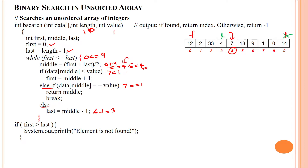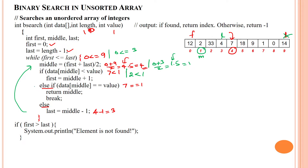Going back to the loop: first index 0 is less than or equal to last index 3 — true. Calculating middle: 0 plus 3 divided by 2 is 1.5, floor value is 1. So middle index is 1 in this second iteration. Data of middle is now 2. Checking: 2 less than 1 is false. Else-if: 2 equal to 1 is also false.